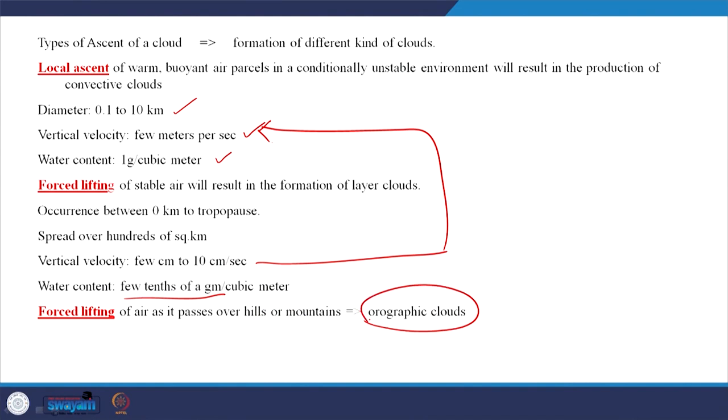Forced lifting occurs when cool air that would not move up on its own encounters a hill. It has to move across the hill in its wind direction, reaches high altitude where temperature is low, and condenses to form a cloud at the top of the mountains. These clouds are generally called orographic clouds. You should remember these names and parameters such as the diameter scales of these clouds.